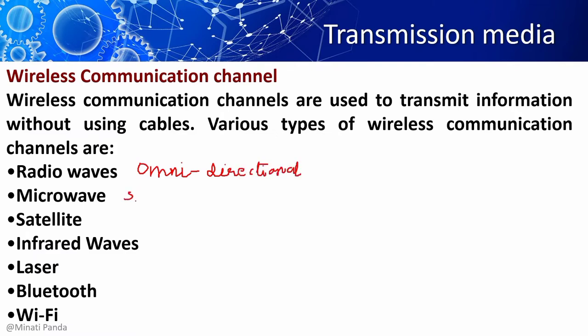Radio waves are very low frequency electromagnetic waves that range from 3 kHz to 1 GHz, and they are omnidirectional in nature.